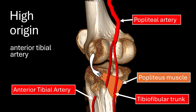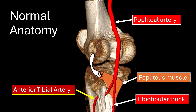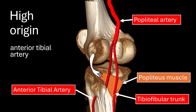This variation is called a high origin or high division of the anterior tibial artery. As opposed to the normal situation where the branching is much lower, this time the origin of the anterior tibial artery is much higher up — this is just an extreme example. With this high origin variant, you have both arteries behind the popliteus muscle, which protects these neurovascular structures from surgery. So this is not an aberrant course — it's just a high origin, but the course of the artery itself remains normal behind the popliteus muscle.